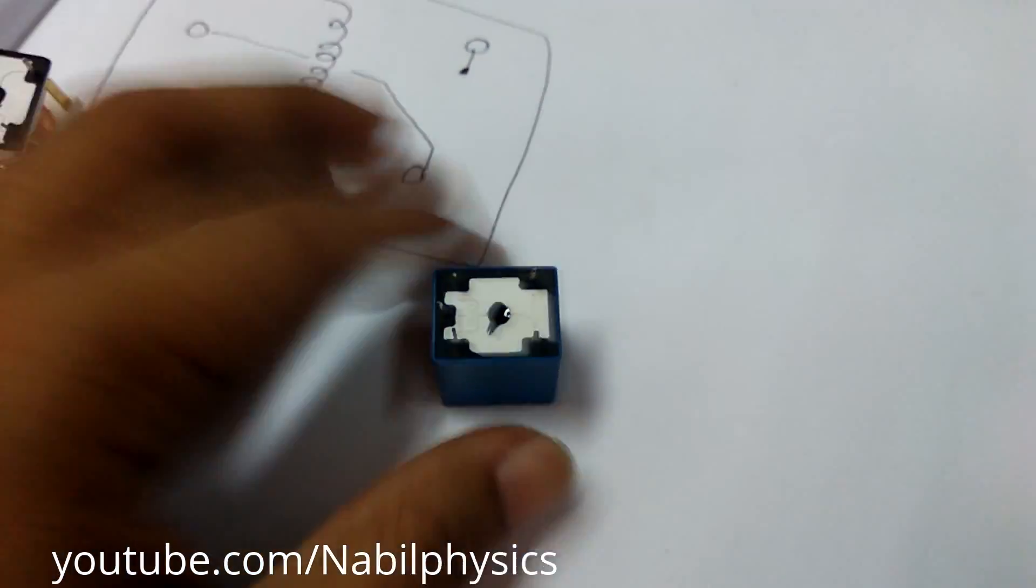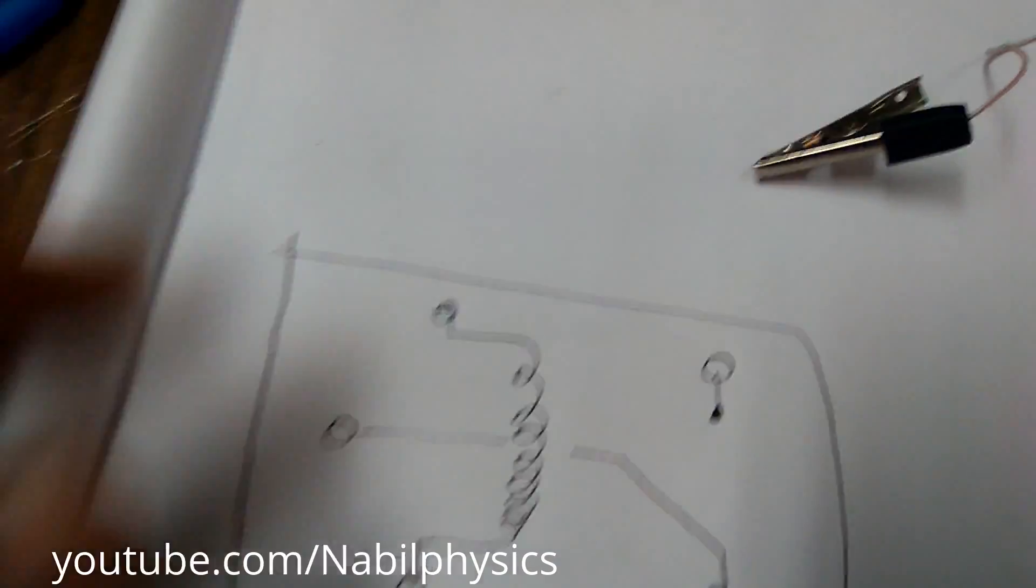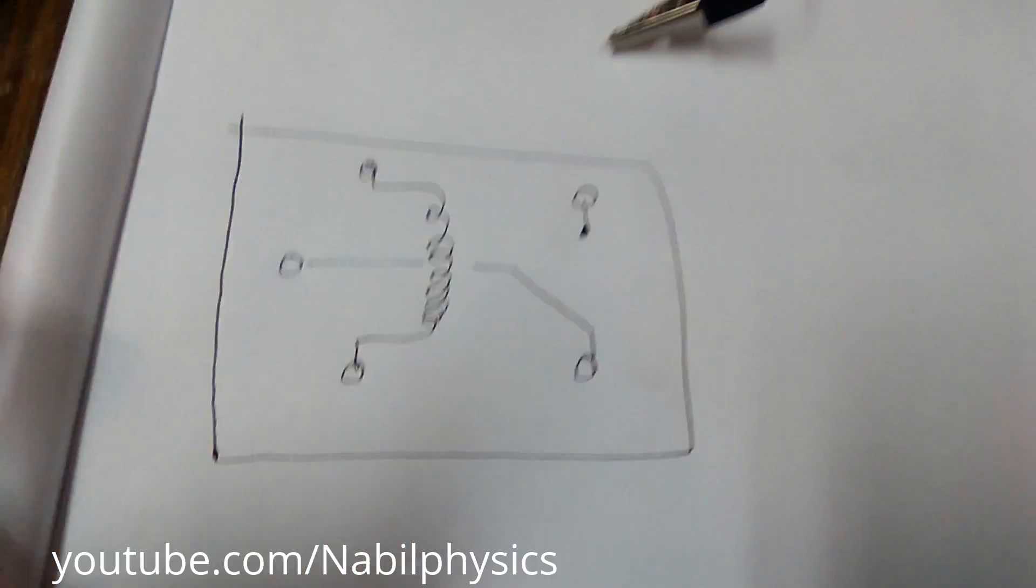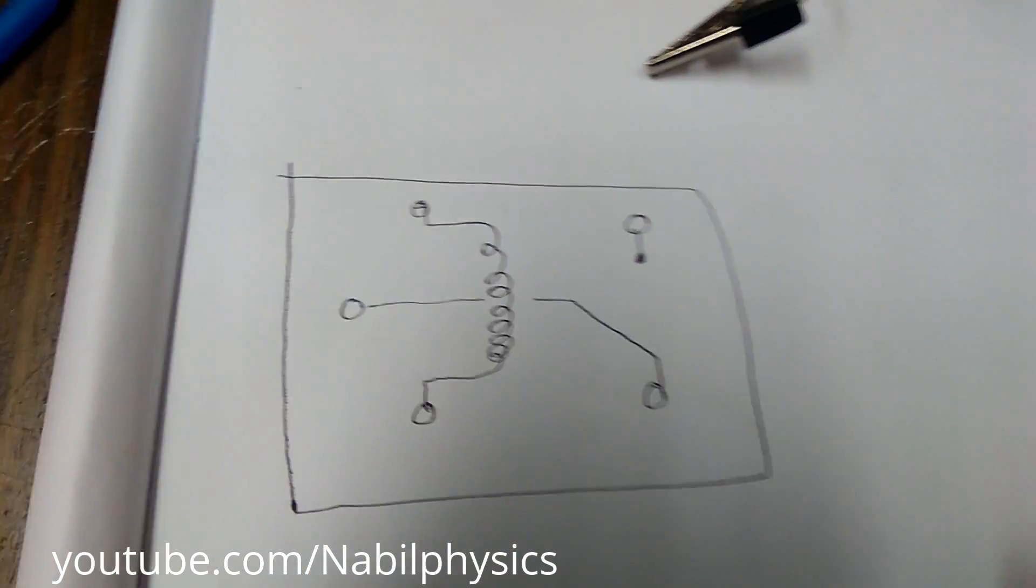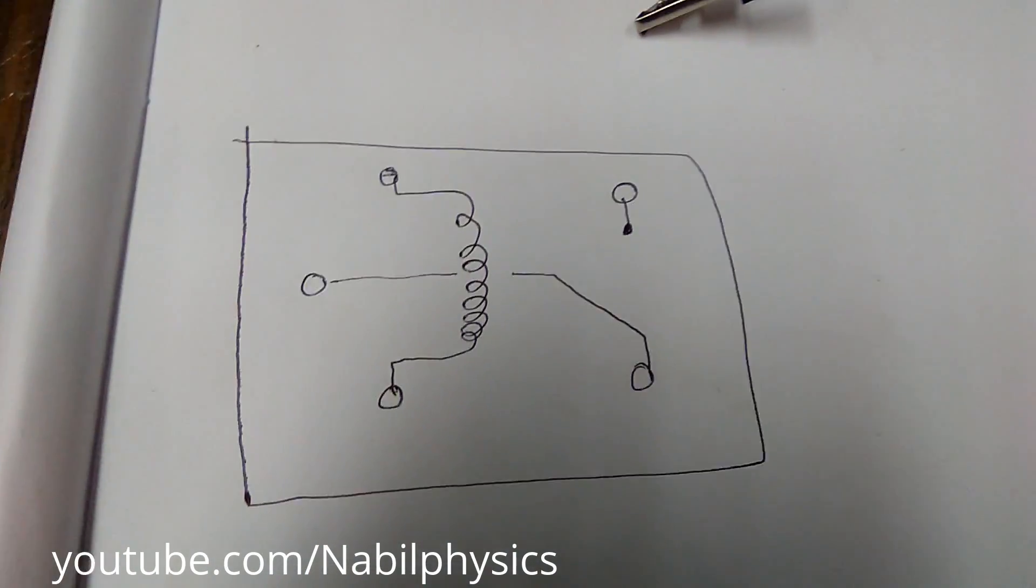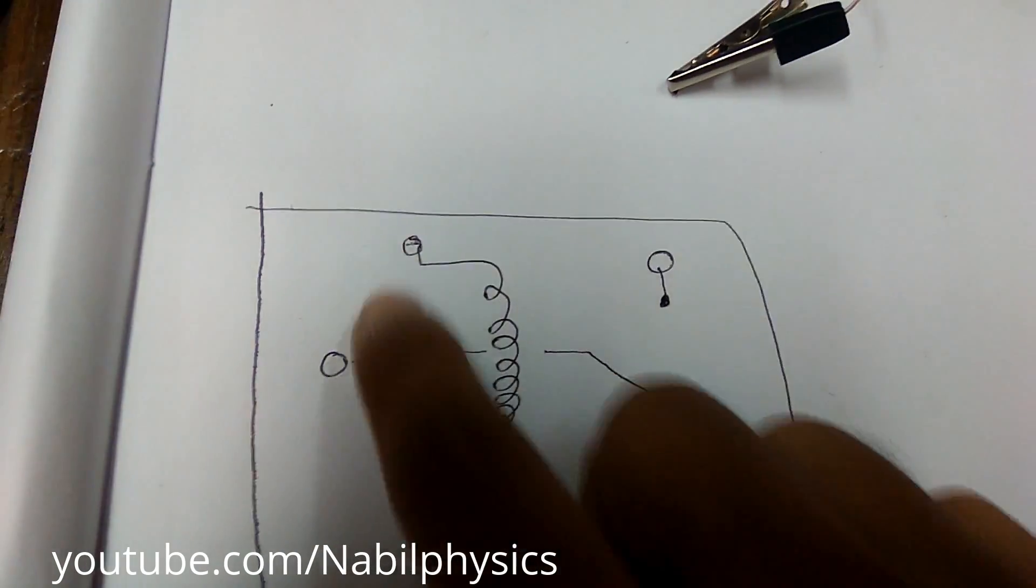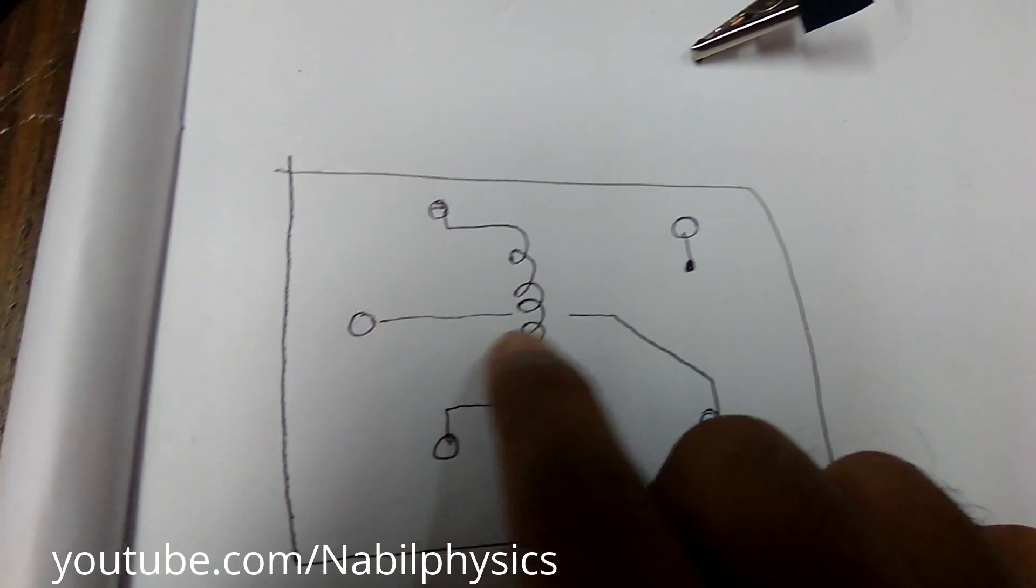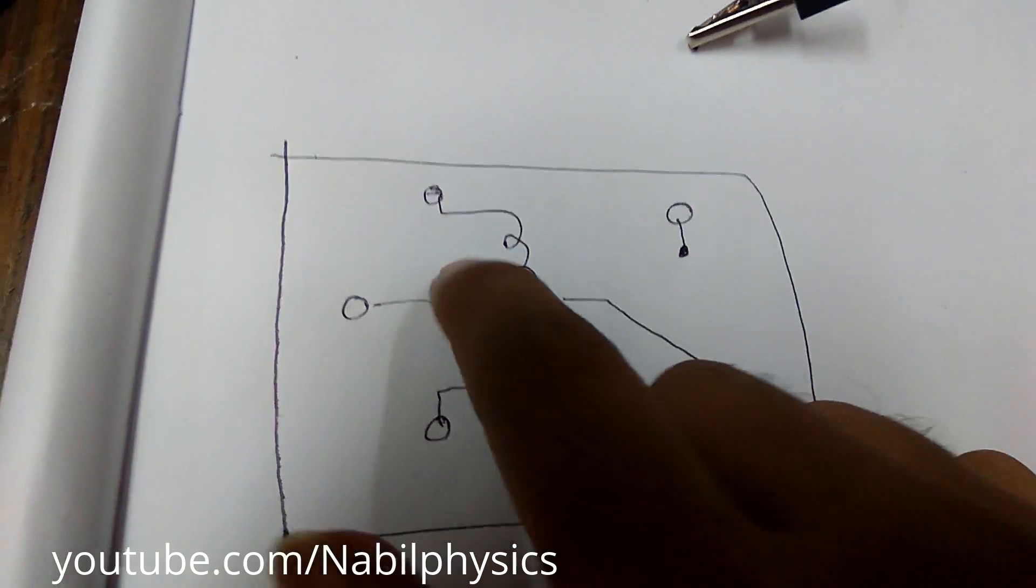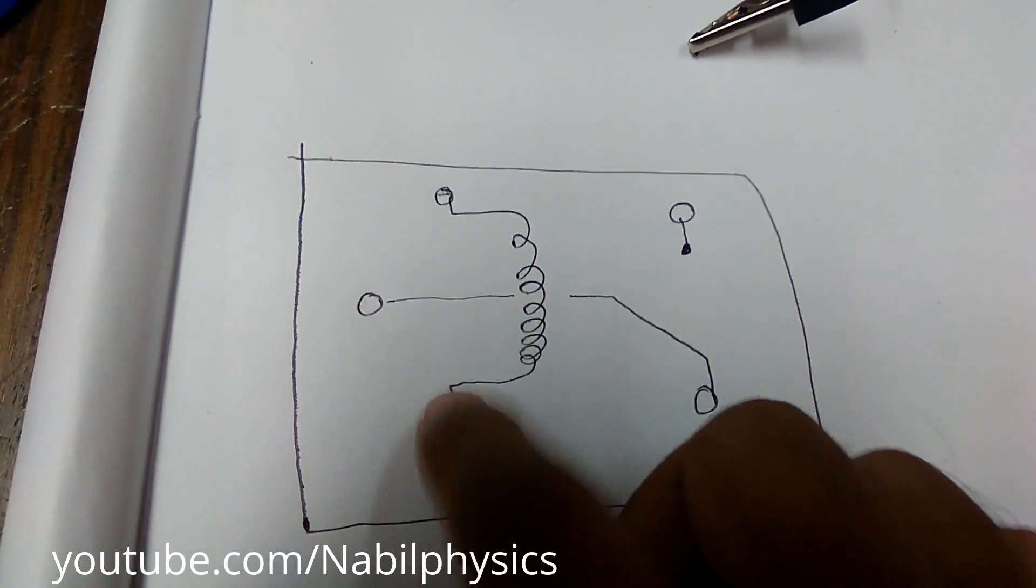So here is a simple diagram. This is a single channel relay. That means you can control a single load by this relay. This is two pins and here is the coil. When you apply 12 volt in this two pins.